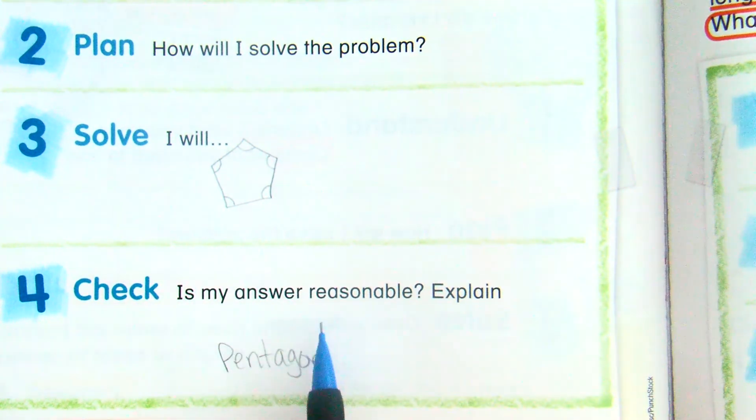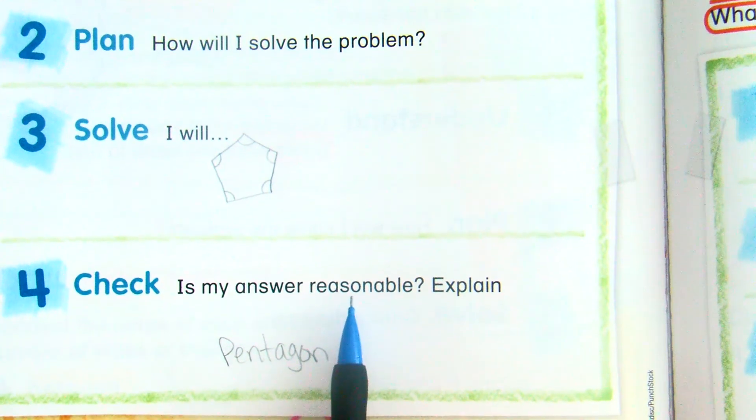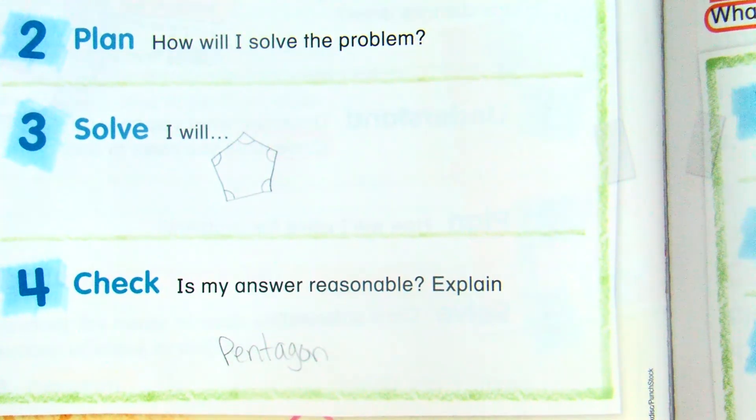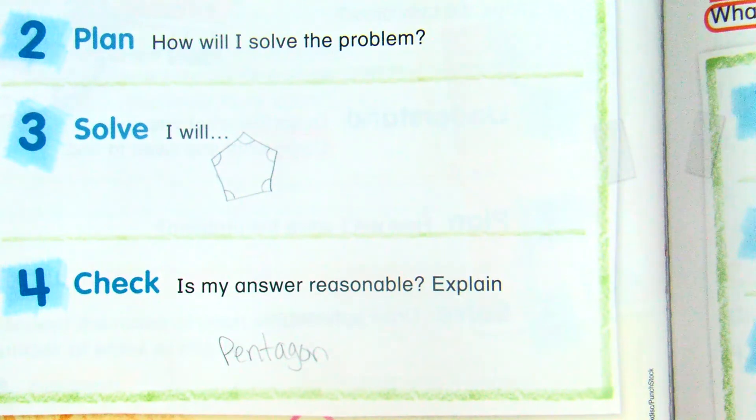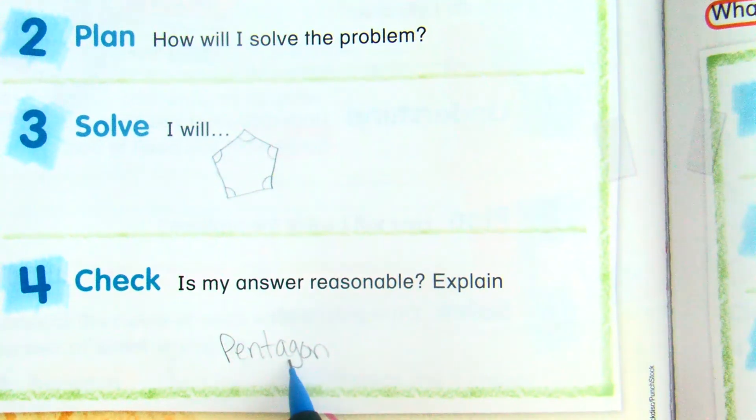When I'm checking to see if my answer is reasonable, I'm checking to see if it makes sense. So I'm just double checking that I have the right number of sides, I have the right number of angles, and do I have the shape name and the shape itself being the same thing? And in this case, I do. So that answer is reasonable.